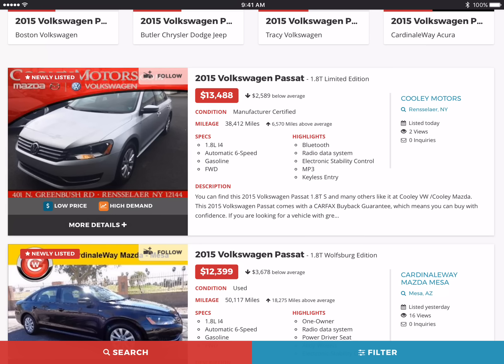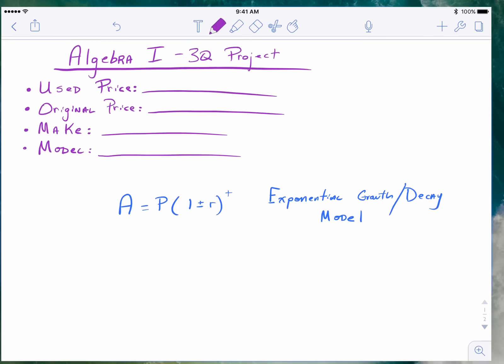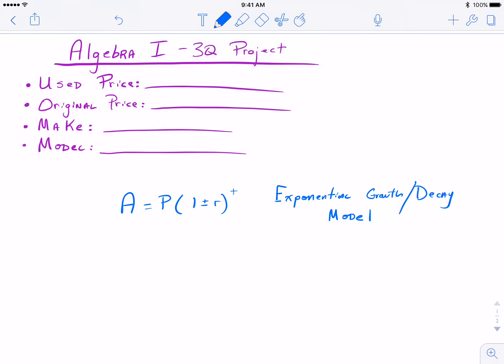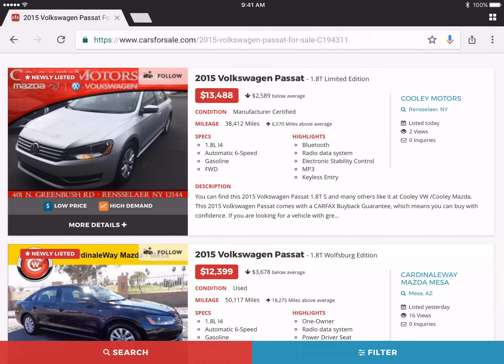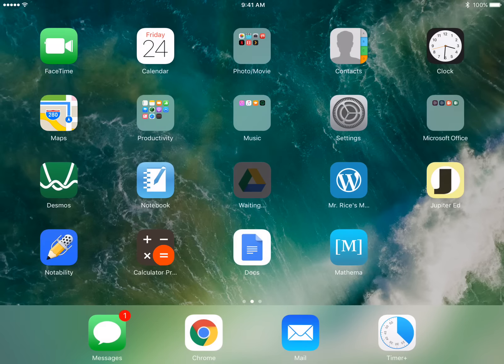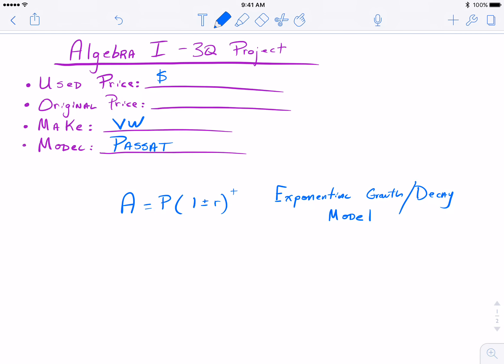This one right here looks pretty good. That is $13,488 and that's a Volkswagen Passat. The make was Volkswagen Passat and the number was $13,488, and this was a 2015 car which means two years old.